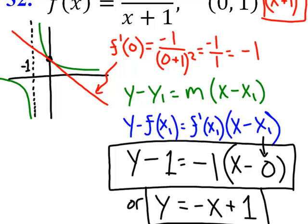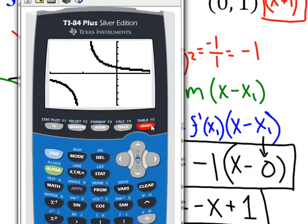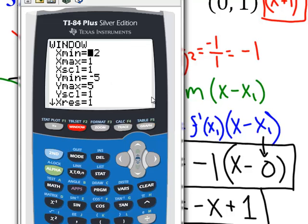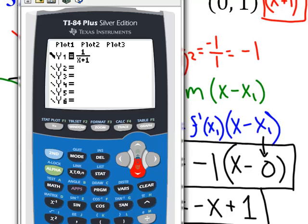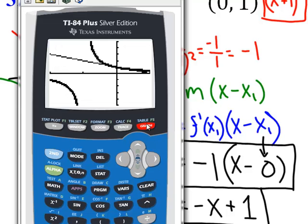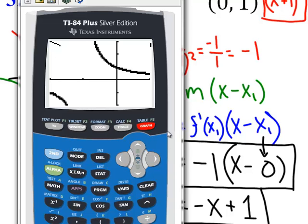The derivative, f prime of 0, I'm plugging in 0 because that's the x value I've been given. If I plug in 0, that's negative 1 over 0 plus 1 squared. I'm just plugging 0 into this derivative equation. That gives me negative 1 over 1, or just negative 1. So the derivative just told me that the slope of this line, this tangent line, is negative 1. So that's a good part. We're well on our way to finding the full equation.